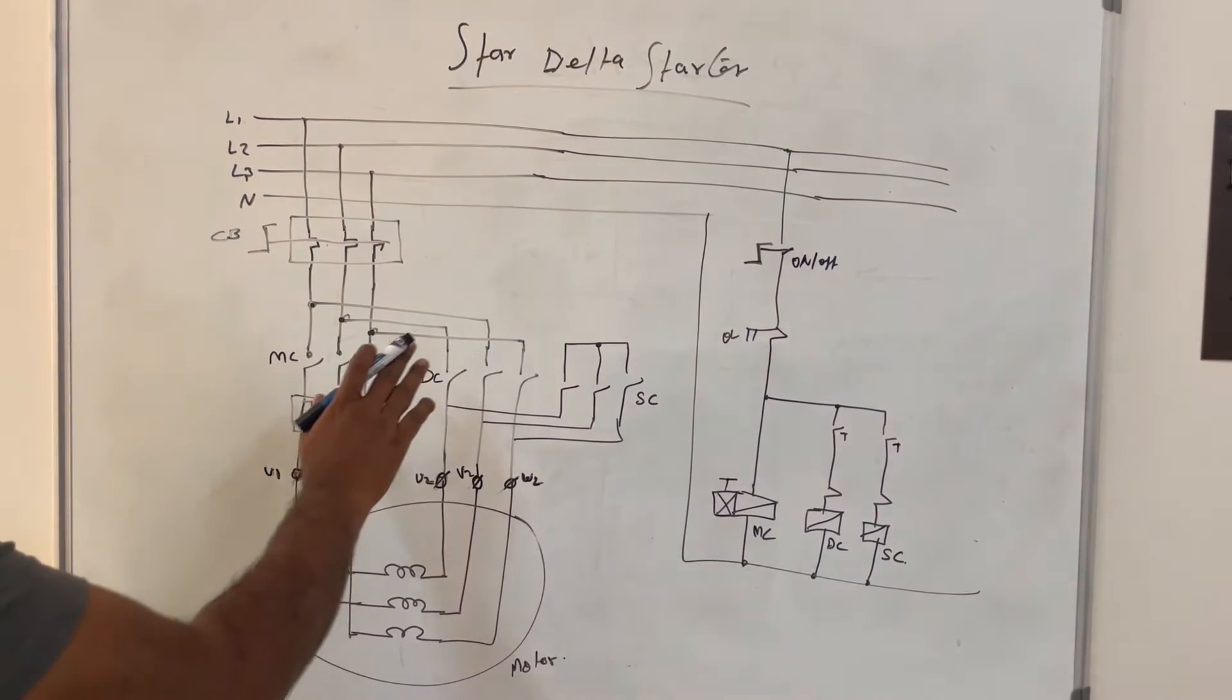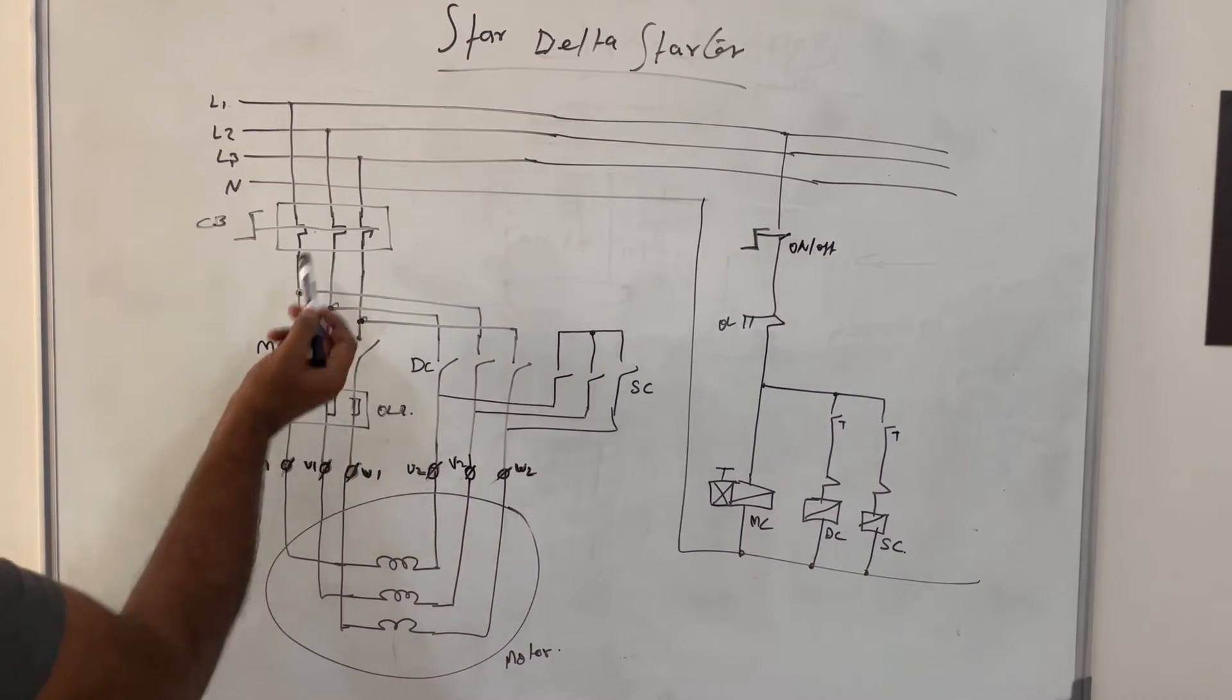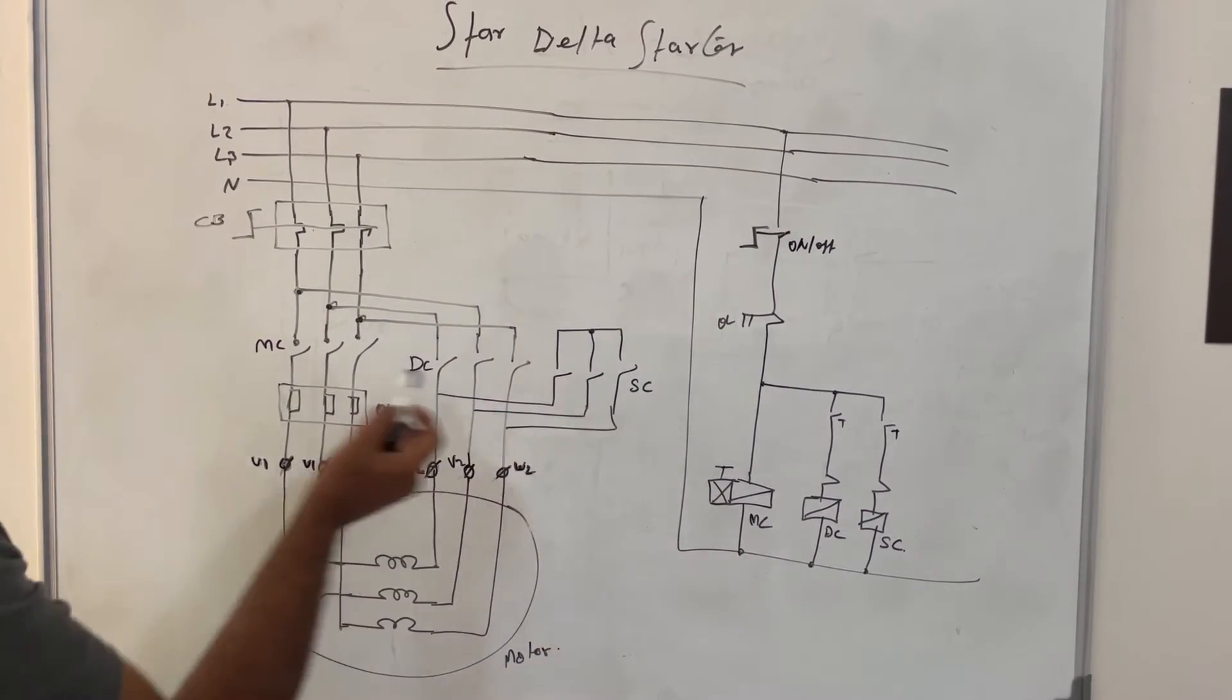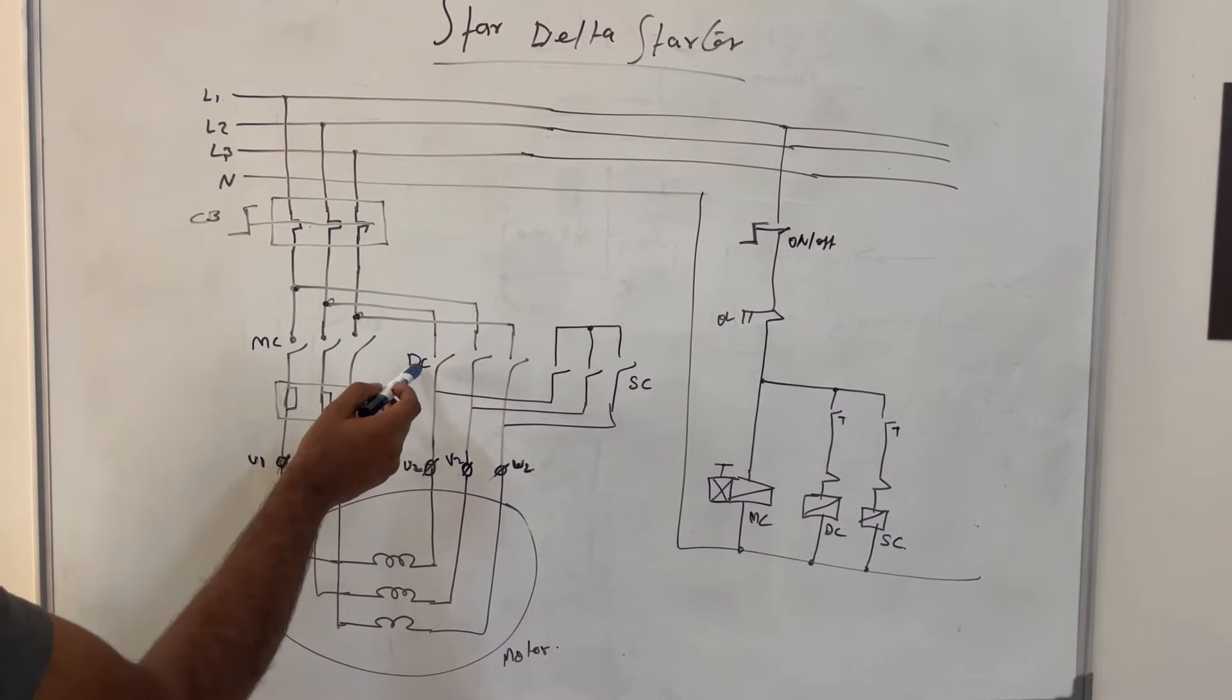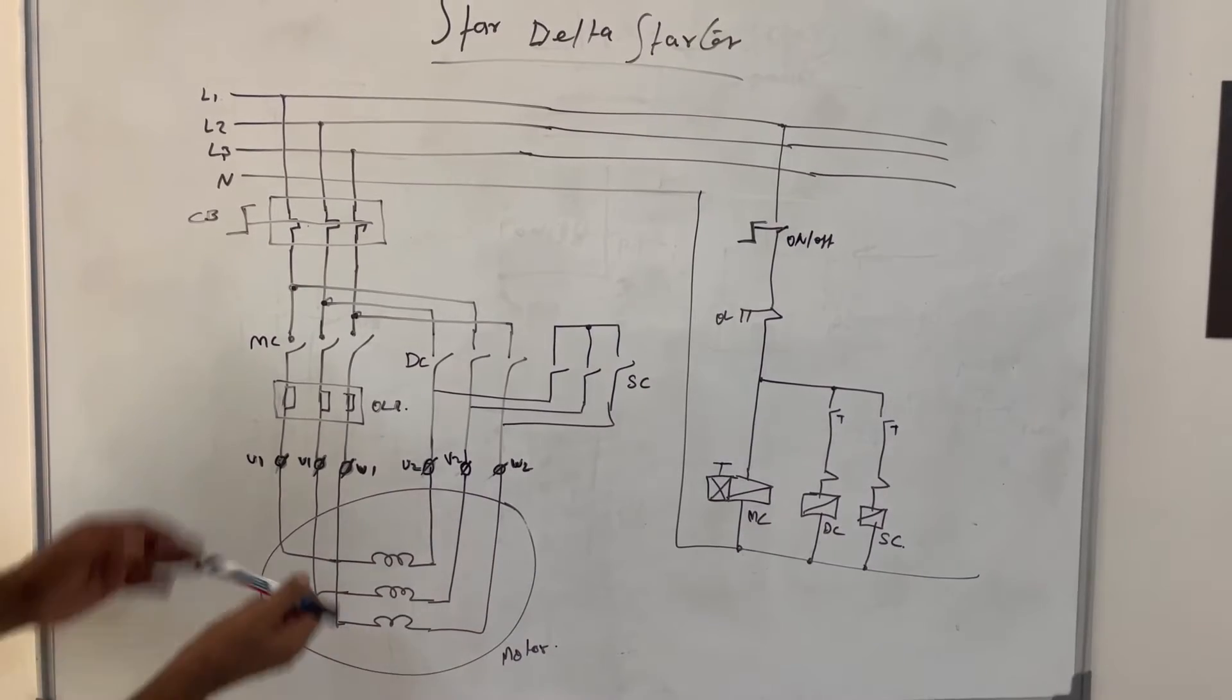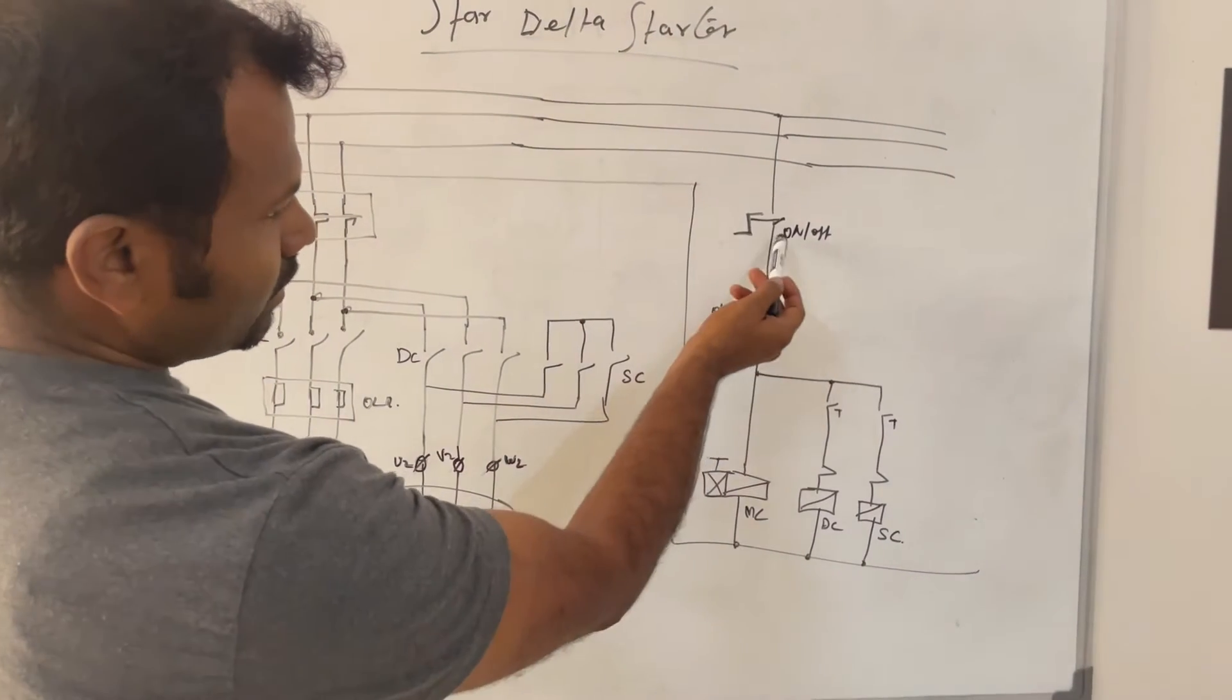Before we will see first normal star delta starter. So this is normal star delta starter. There are three contactors: one is main contactor, delta contactor, and star contactor. Main contactor is connected with U1, V1, W1 and star contactor and delta contactor is connected with U2, V2, W2 with motor winding. The controls are here.